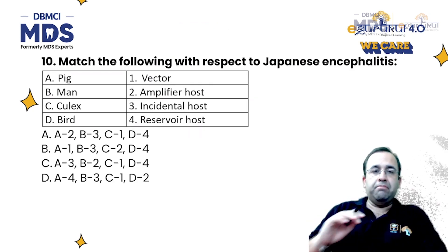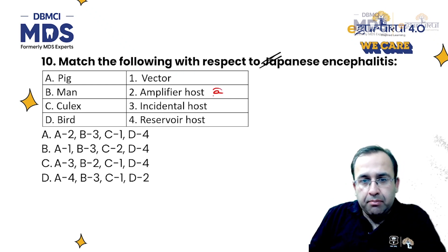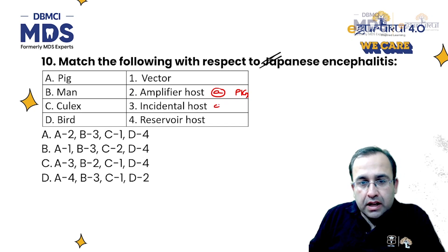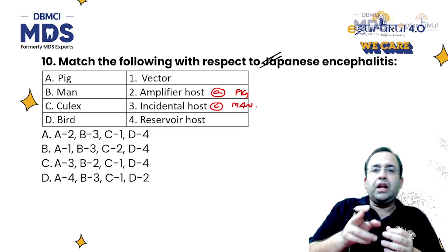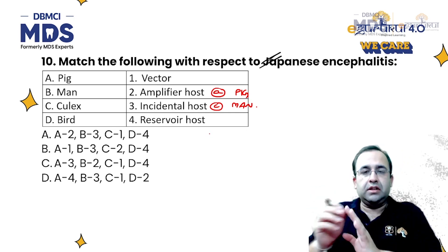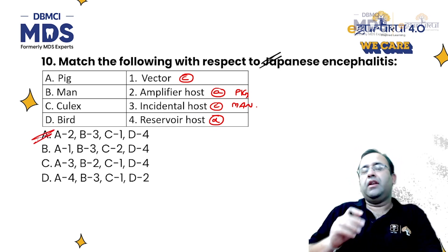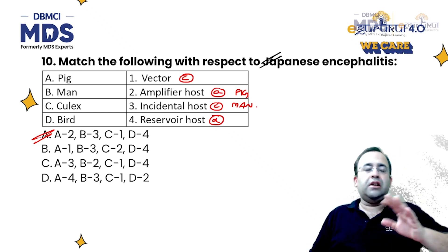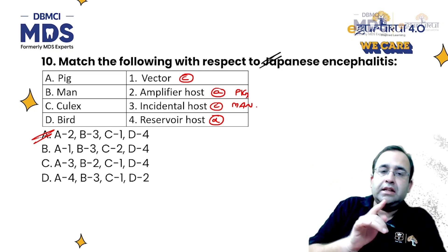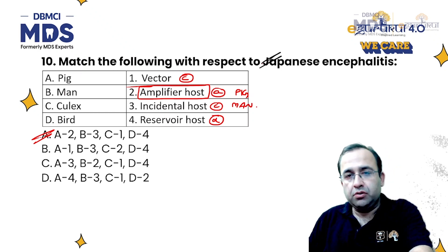Next question: match the following with respect to Japanese encephalitis. When we talk about Japanese encephalitis, the first key point is that pig is an amplifier host — pig does not show symptoms, it just amplifies. Man is an incidental host. The normal life cycle is pig–Culex–pig, or bird–Culex–bird. Culex is the vector, and herons and birds are the reservoir host. The answer is A — man is an incidental host, and pig is an amplifier host that amplifies the disease without showing symptoms.